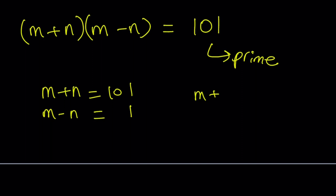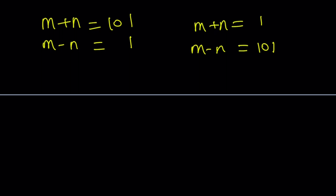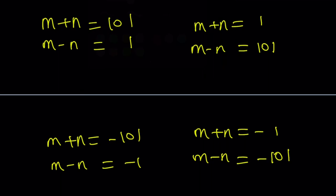m plus n can be 1, and m minus n can be 101. m plus n can be negative 101, and m minus n can be negative 1, because their product is still 101. Or m plus n can be negative 1, and m minus n can be negative 101. So we have four cases.